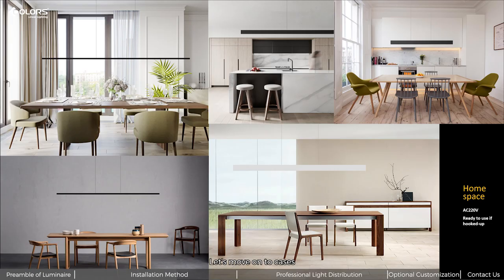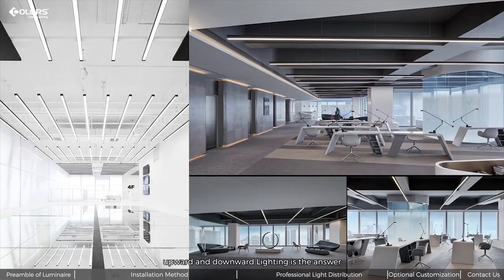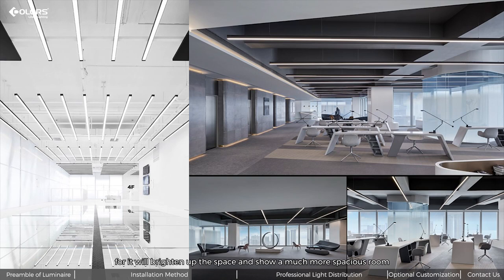Let's move on to cases. The 220-volt type is ideal for a living room. You can determine the lens, color temperature, and color as per overall decoration. But what if the ceiling is low and depressing? Is it possible to create a more 3-dimensional space visually? Upward and downward lighting is the answer, for it will brighten up the space and show a much more spacious room. A real fit for eyes.